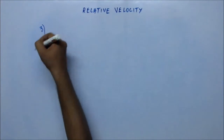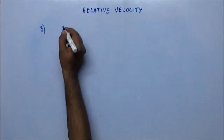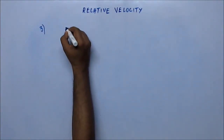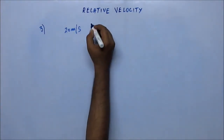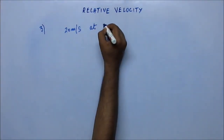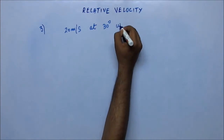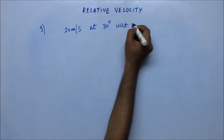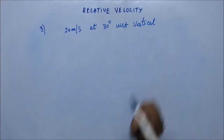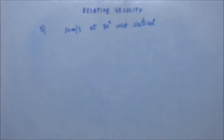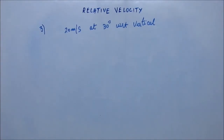This is an oral problem: rain is falling at 20 meters per second at 30 degrees with respect to vertical. The question is: what should be the velocity of a man so that the rain appears to him to be falling vertically downwards?